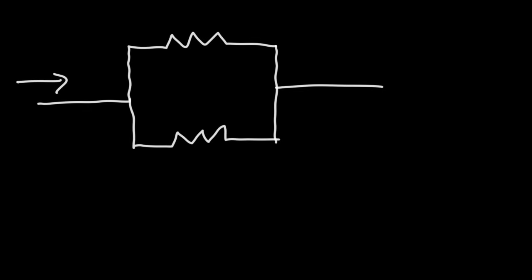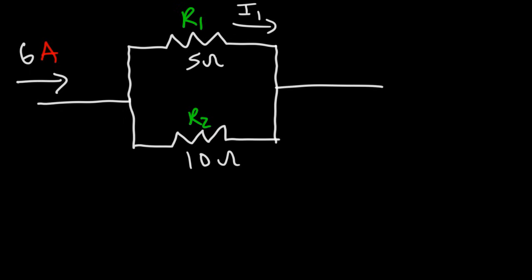Now let's work on a different type of example. We're going to have two resistors connected in parallel, and a total current of 6 amps flowing in the circuit. R1 has a value of 5 ohms and R2 has a value of 10 ohms. What is the current flowing through resistor 1 — what is i1? Feel free to pause and think of a way to calculate i1, either conceptually or using a formula.